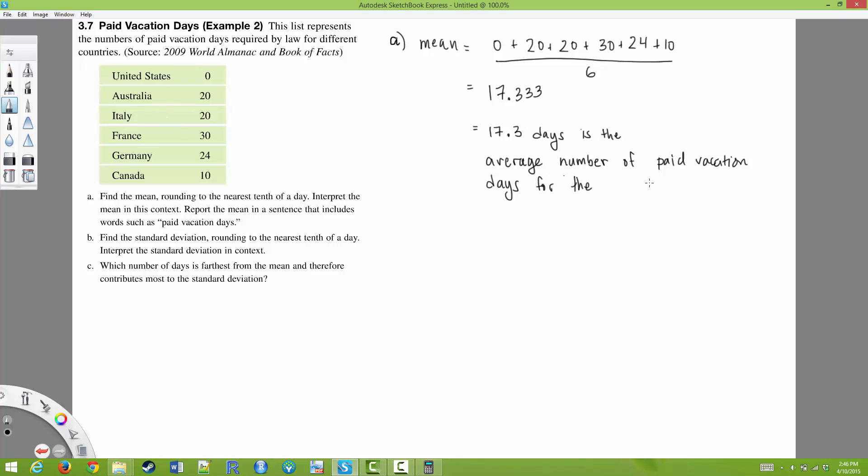Part B asks us to find the standard deviation for the six countries in the list. So between these six countries, the average number of paid vacation days is 17.3. Part B asks us to find the standard deviation rounding to the nearest tenth of a day. Interpret the standard deviation in context. So I'm going to keep the mean equal to 17.333. I'm going to keep a hundredth place.